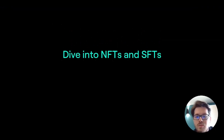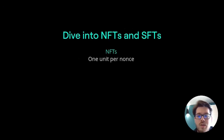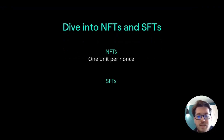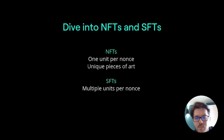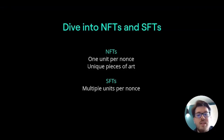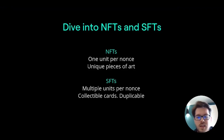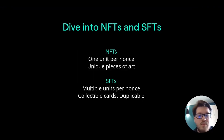NFTs and SFTs do not have decimals. NFTs have only one unit per nonce, while SFTs can have multiple units per nonce. Think of NFTs as unique pieces of art that are part of the same collection — all NFTs within the collection share the same token identifier but have different nonces to represent their uniqueness. SFTs can be likened to collectible playing cards; all possible variations are bundled into a single collection sharing the same token identifier, and each unique card has a distinct nonce with possible multiple duplicates represented by the same nonce.